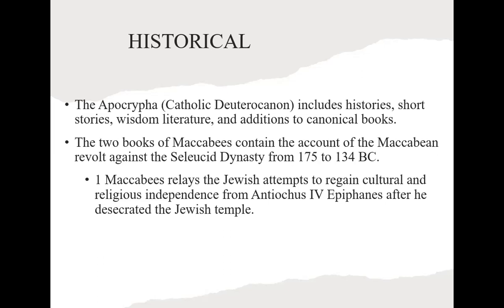Briefly about some of them: the books of the Maccabees are historical books. 1 Maccabees is very interesting because it covers events during those 400 years — when Alexander the Great had conquered the known world and died, the Jews' area became part of the Seleucid dynasty, ruled by the Greek empire. They persecuted the Jews quite badly, particularly a man called Antiochus Epiphanes, and some Jews rebelled. 1 and 2 Maccabees record those events.